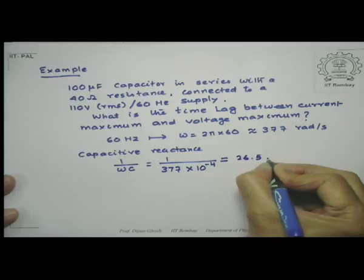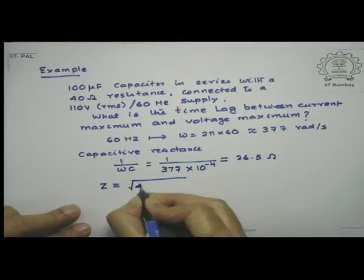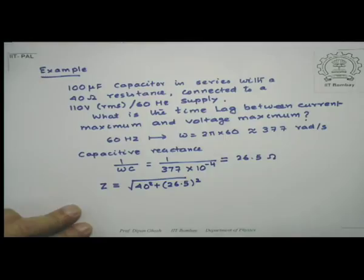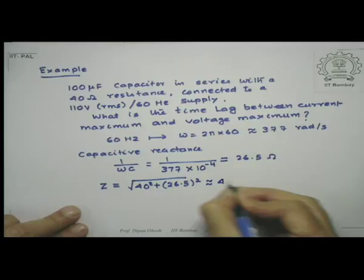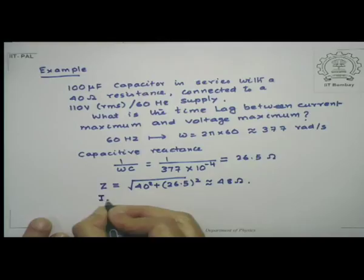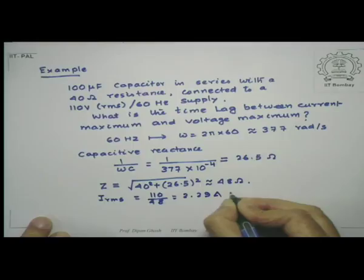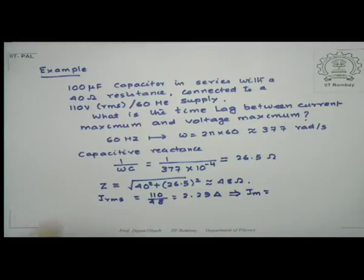I can immediately calculate the impedance of the circuit: Z = √(40² + 26.5²), which works out to approximately 48 ohms. Since the voltage is given in RMS, the RMS current is 110/48 = 2.29 amperes. This corresponds to a peak current of 2.29 × √2 = 3.24 amperes.